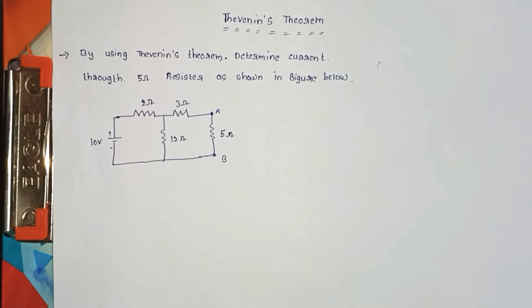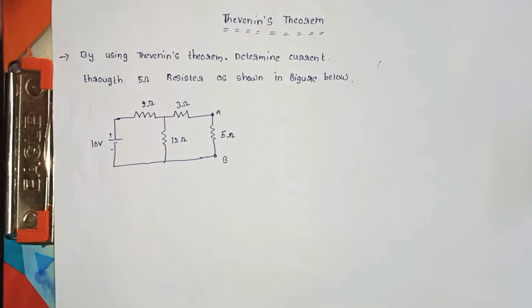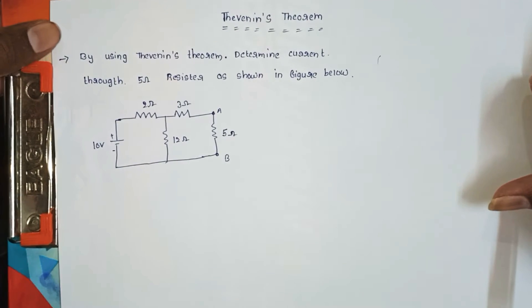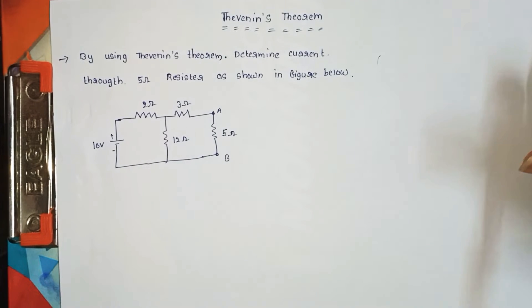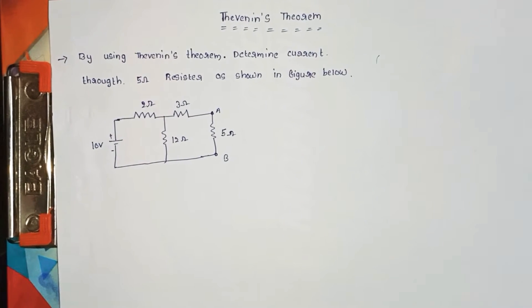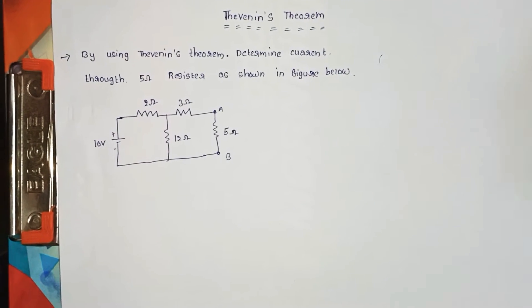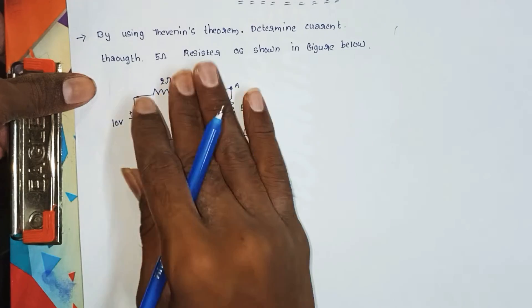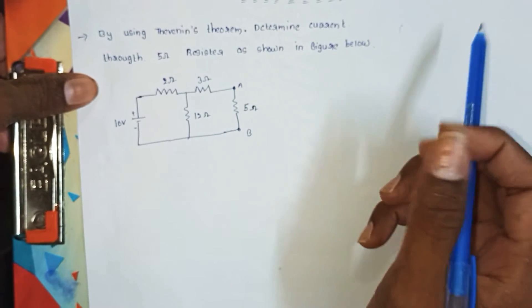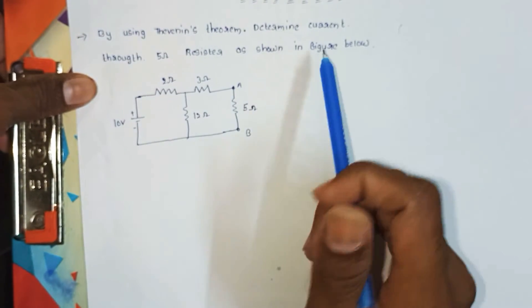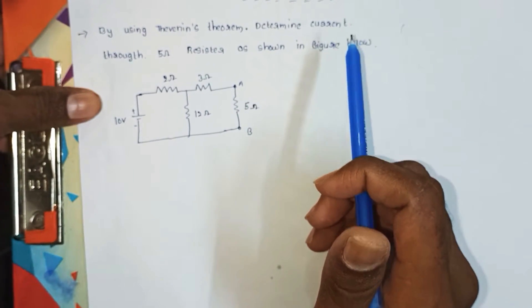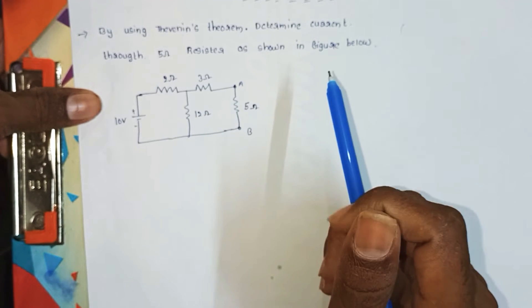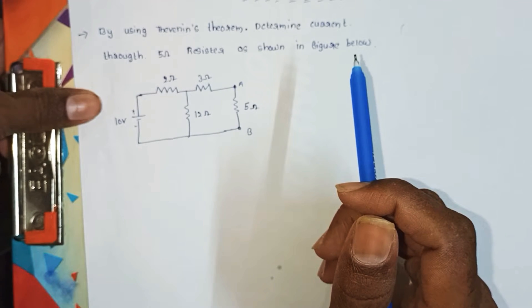Hi friends, welcome to Ganesh Arita's YouTube channel. Today in this video I will explain about Thevenin's theorem. First, what is the statement of Thevenin's theorem? In any linear bilateral network, it can be replaced by an equivalent voltage source VTH in series with the resistance RTH.